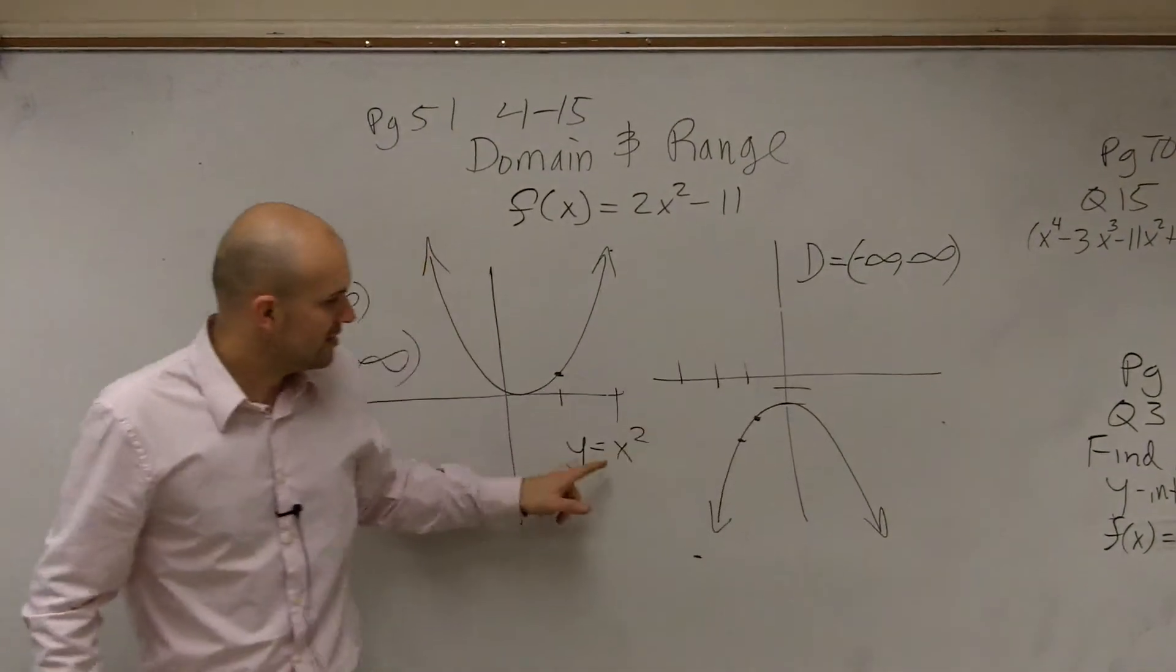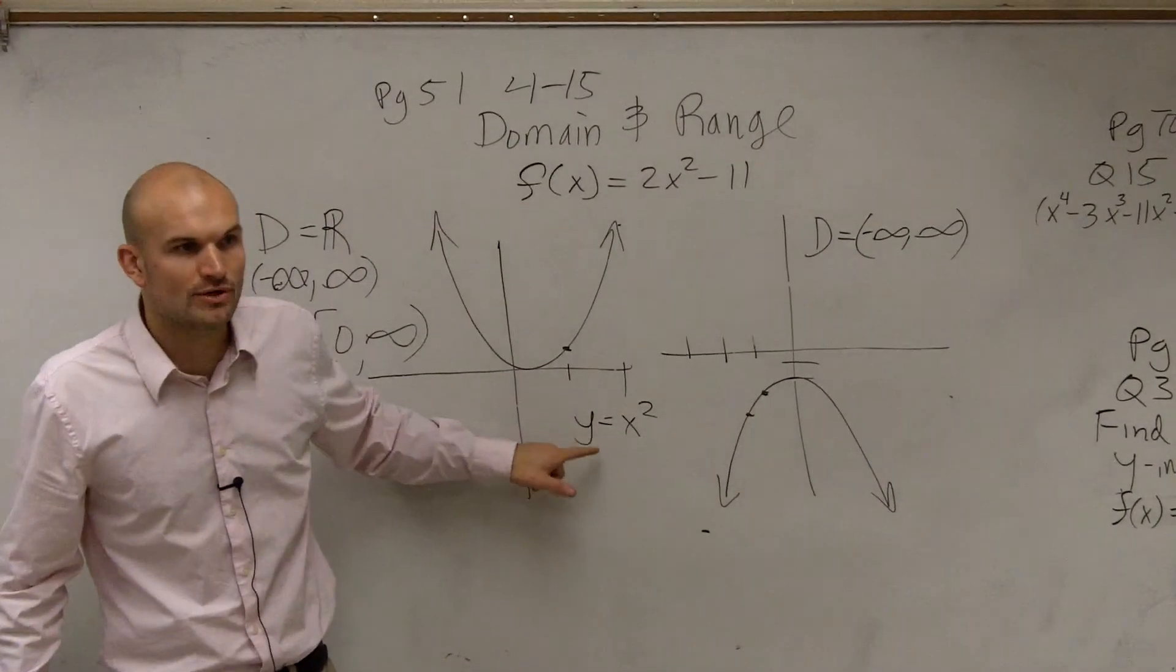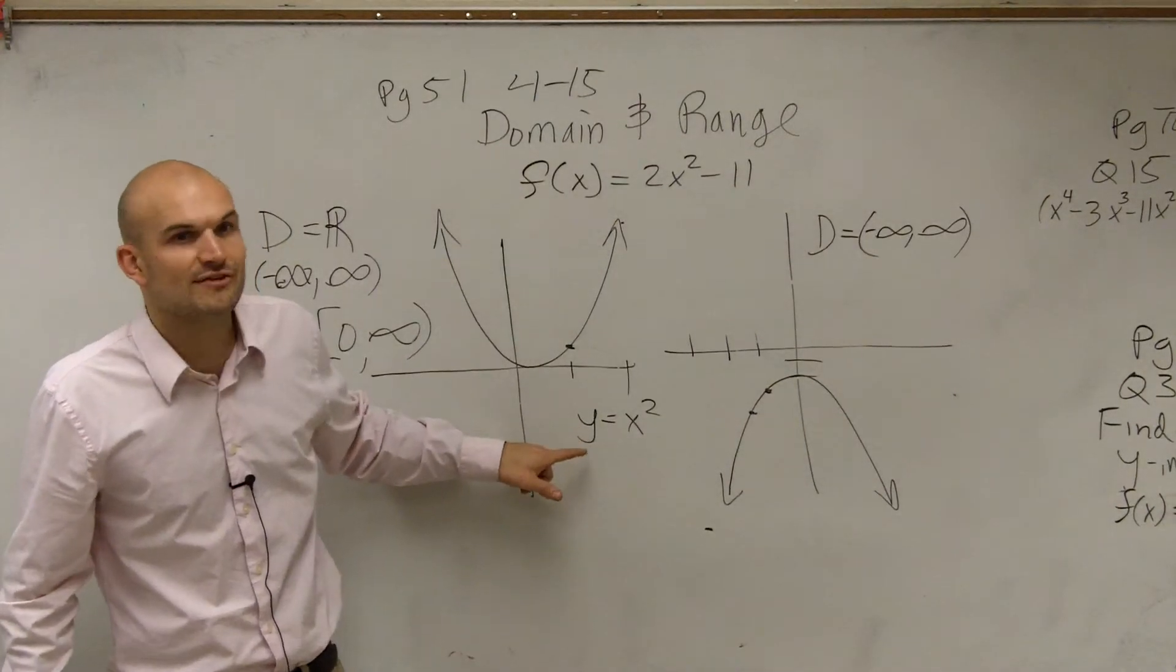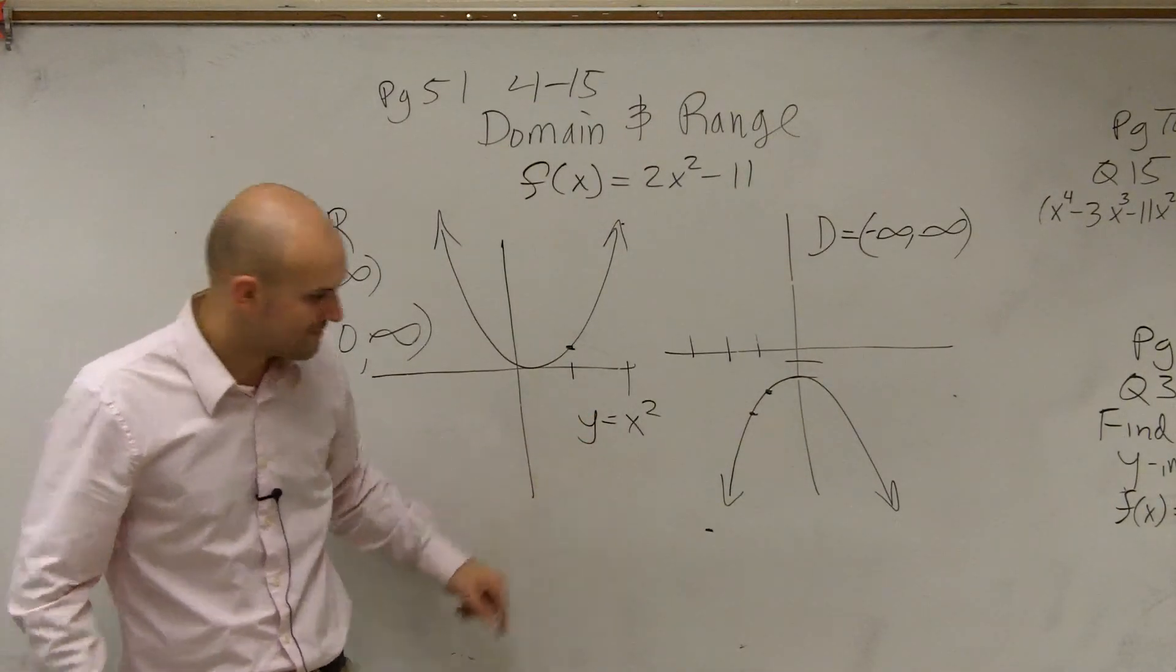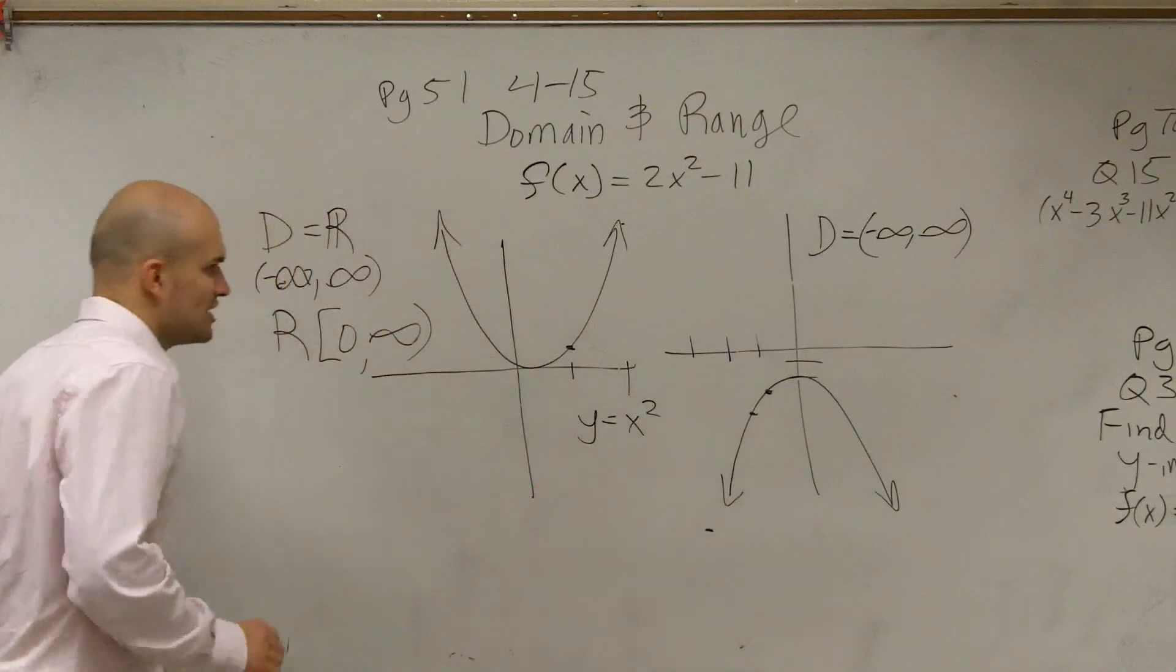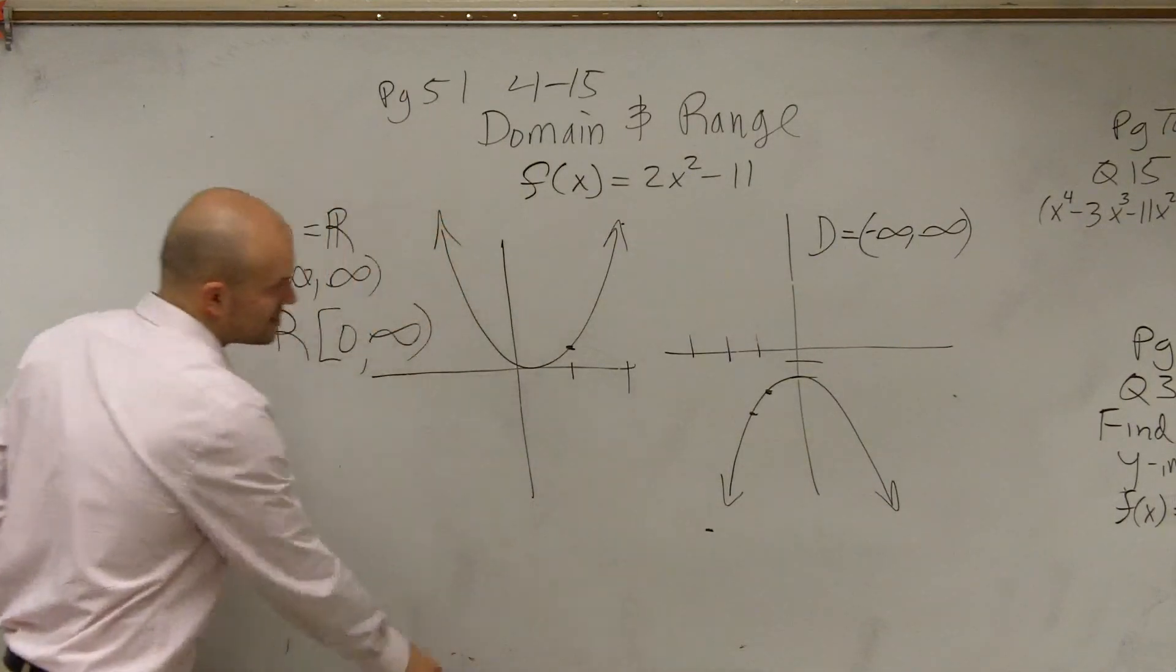But however, will you always get all real numbers for the y? No. You can never get a negative number. If you square it, you're never going to get negative. So that's just looking for the general function. However, let's look at this equation.